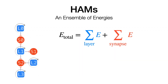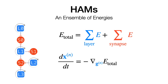We can now extend this fundamental realization to any Hierarchical Associative Memory, which is also just an ensemble of energies, where the total energy is the sum of the energies of each layer and each synapse. The update rule for each of the states of these layers is then simply the negative gradient of the total energy with respect to that same layer's activations.